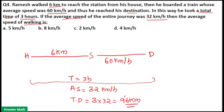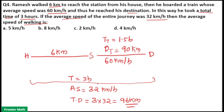He walked 6 km. That means the remaining distance he travelled by train is 90 km. That means the time taken for the train journey is 90 by 60, that is 1.5 hours.